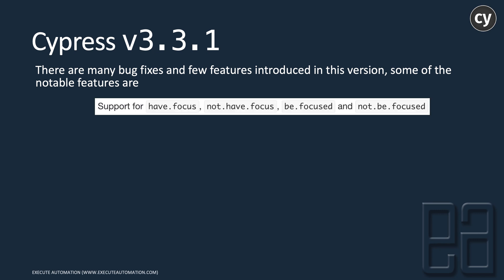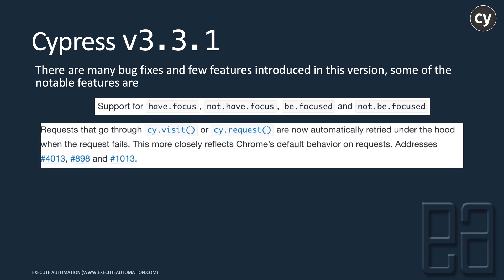Support for have.focus, not.have.focus, be.focused, and not.be.focused are new assertion libraries introduced in 3.3.0. There were some bugs reported by the community and those are now fixed and working, which you'll be seeing in this video. Additionally, requests that go through cy.visit and cy.request are automatically retried under the hood when the request fails, more closely reflecting Chrome's default behavior — something the community reported as a bug and is now fixed.